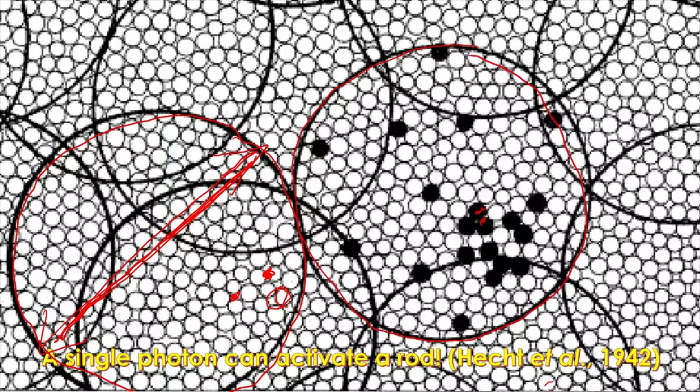What that means is that a single photon should be enough to activate a single rod. This was a really amazing conclusion from the study because this is far more sensitive than any man-made light sensor at the time. I don't know what it is these days, but human retina is an amazing machine to detect light. It is super, super sensitive in detecting light. That was the conclusion of their study.